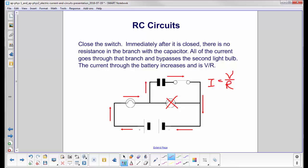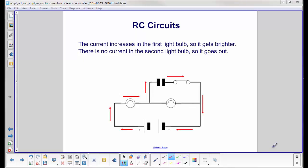So what happens is we have more current coming out of the battery, and this light bulb here will get brighter. The current will increase in the first light bulb, so it gets brighter, but none of the current is going through this light bulb now, so it goes out.